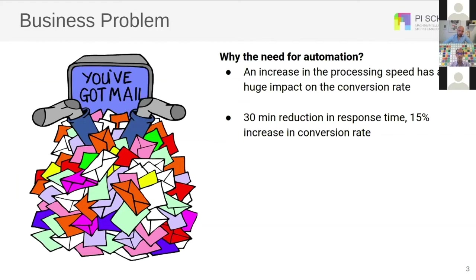Why do we need automation here? Humans are perfectly capable of doing this job, and usually you would think automation is made to replace human labor — that's actually one reason it's important. But the main point here is the conversion rate. The speed at which emails are processed is extremely important for conversion rate, and machines are much faster than humans. A 30-minute reduction in response time gives a 15% increase in conversion rates, which is huge for the company and revenues.